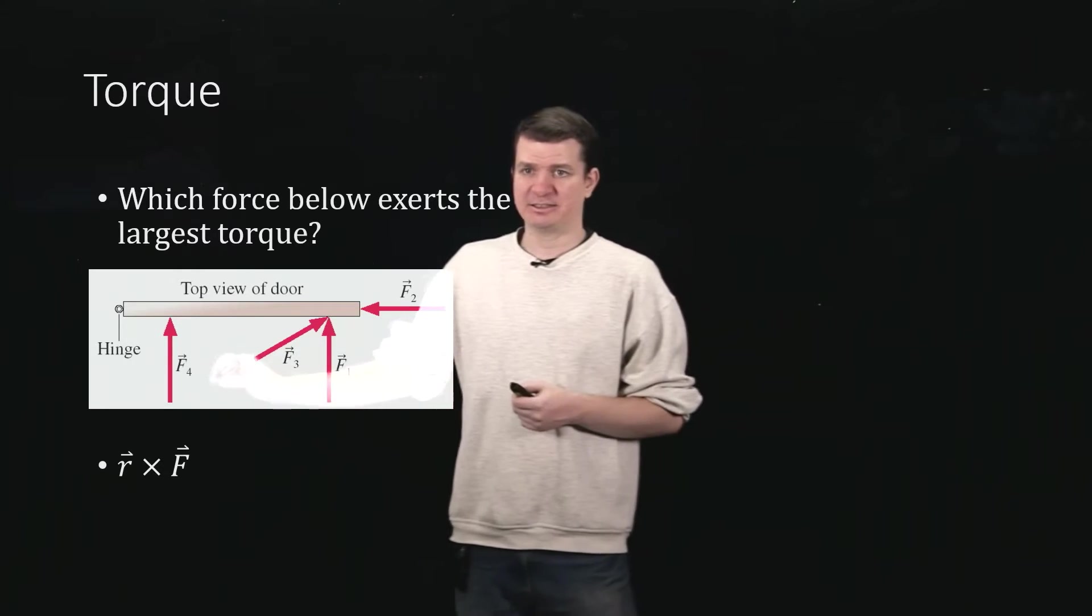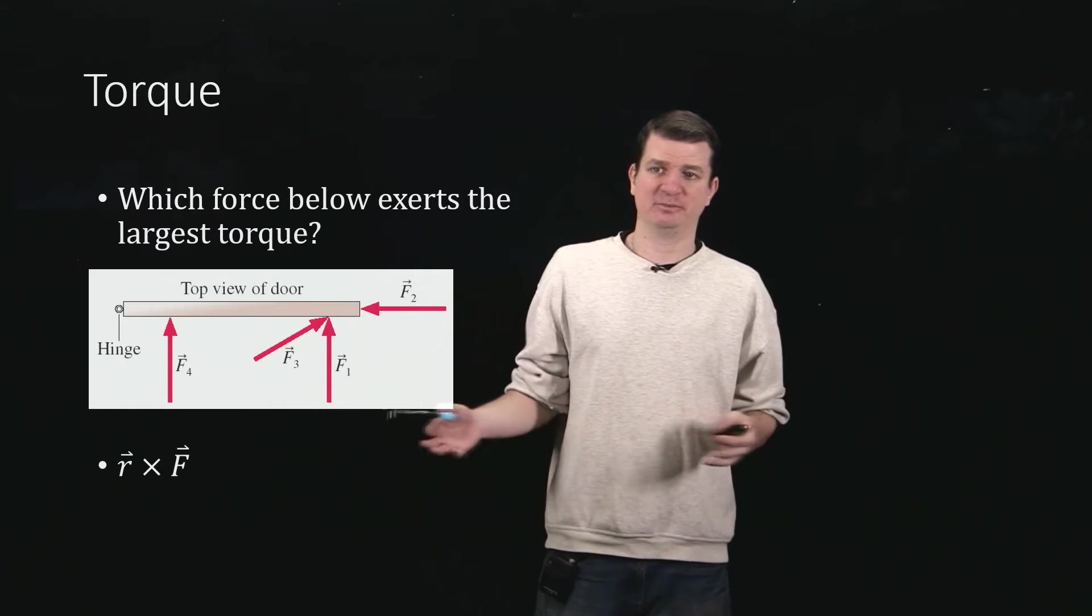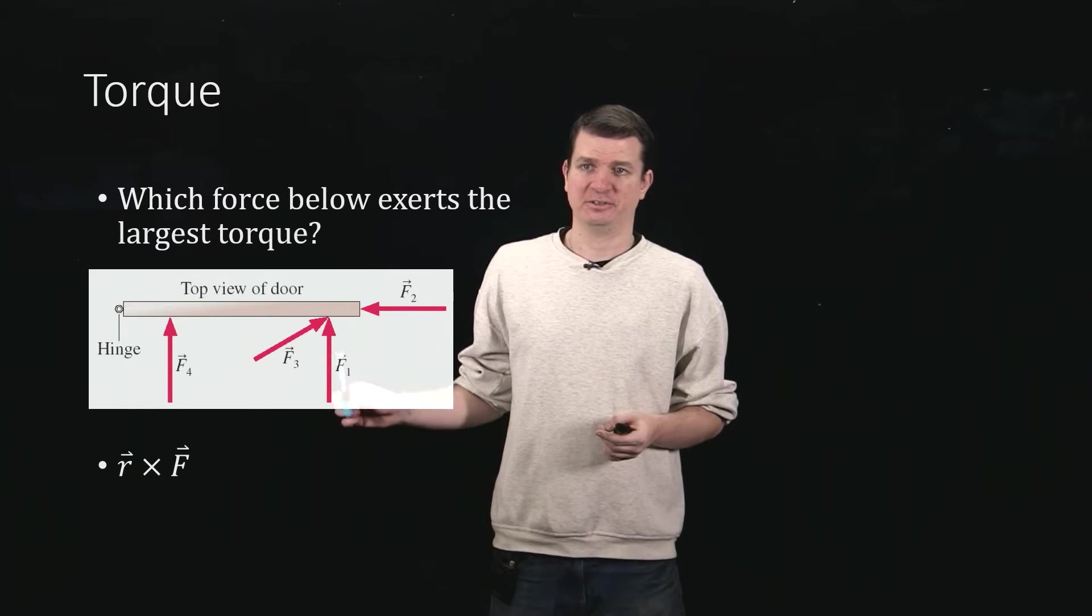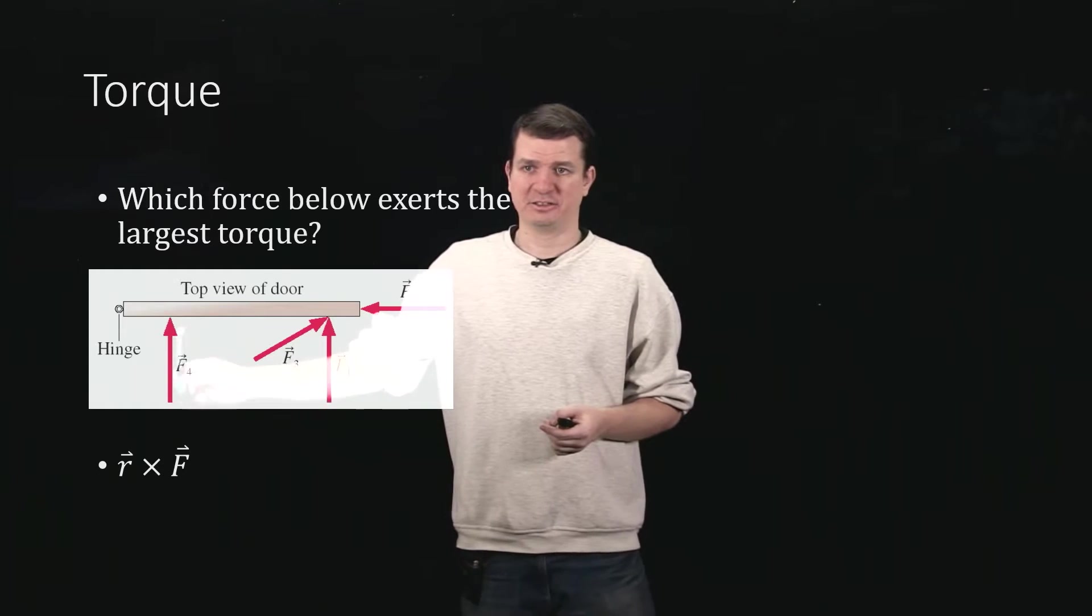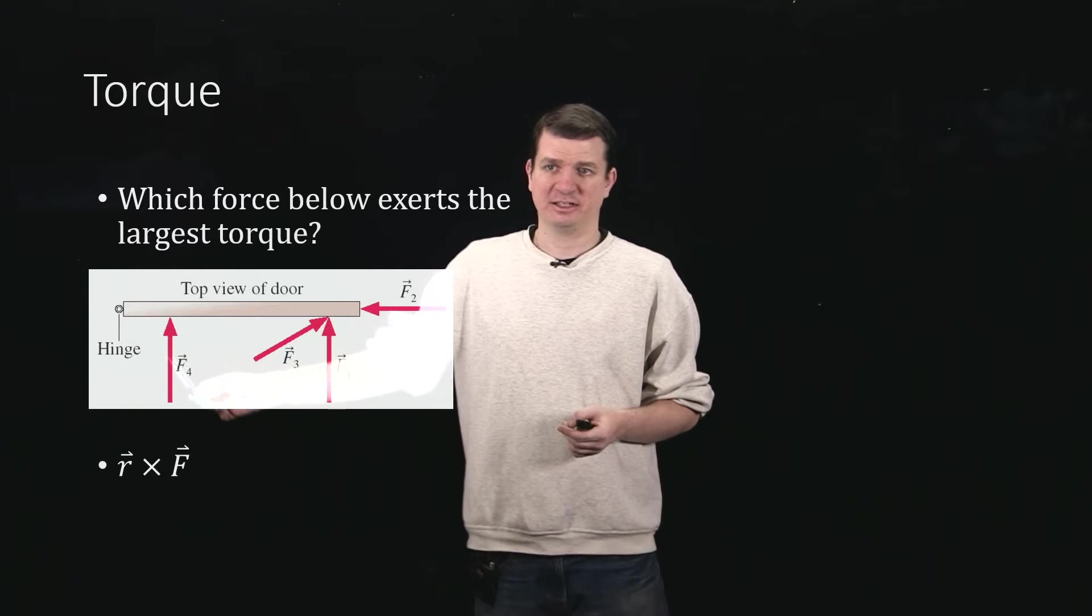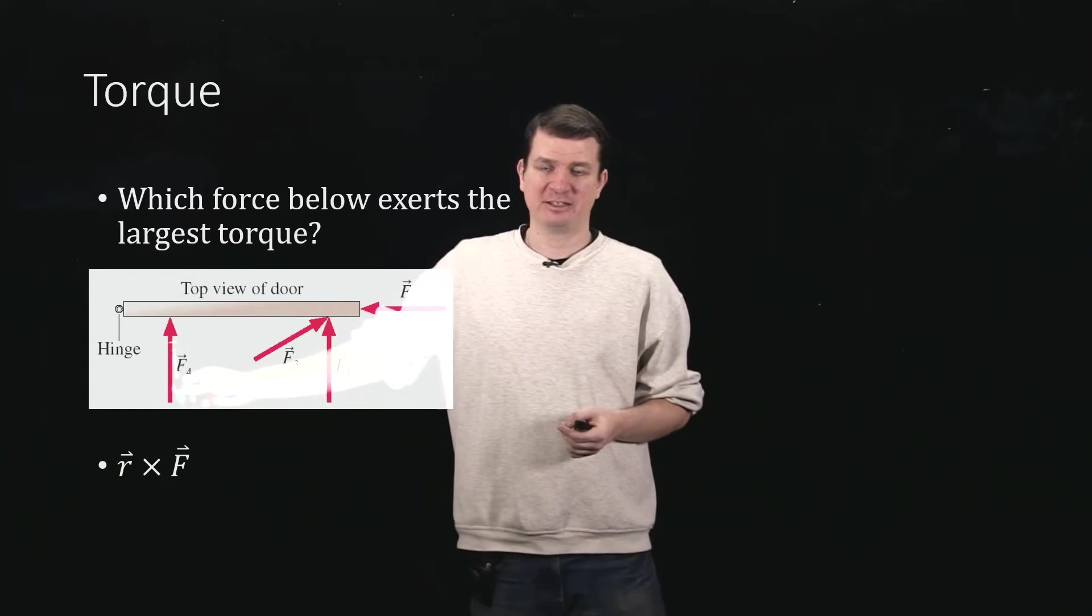This one is acting at some angle, so we'll take the sine of the angle. It's going to be less than 1, so it's certainly less than this torque. And this one on the other hand is acting closer, perpendicular, so the sine of the angle is sine of 90 which is 1 for this force and this force, but this one's acting much closer.